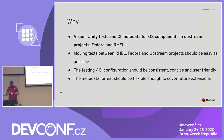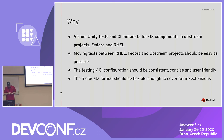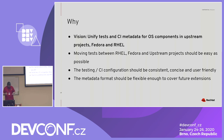This basically means we can easily move tests between RHEL, Fedora, and upstream projects — that is the vision we'd like to get to. Testing and CI configuration should be consistent, concise, and user-friendly. The test metadata format should be flexible enough to cover future extensions, prepared so you can basically extend it to various executions.